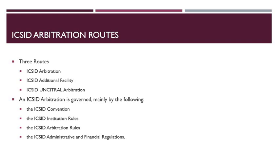This lecture and the next few deal with ICSID arbitration, that is the first route. An ICSID arbitration is governed by the ICSID convention, the ICSID institution rules, and the ICSID arbitration rules. In addition, it is also governed by the ICSID administrative and financial regulations.